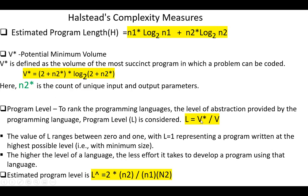Program level L is defined as V star over V. It ranges from 0 to 1. L equal 1 represents a program written at the highest possible level, i.e. with minimum size.